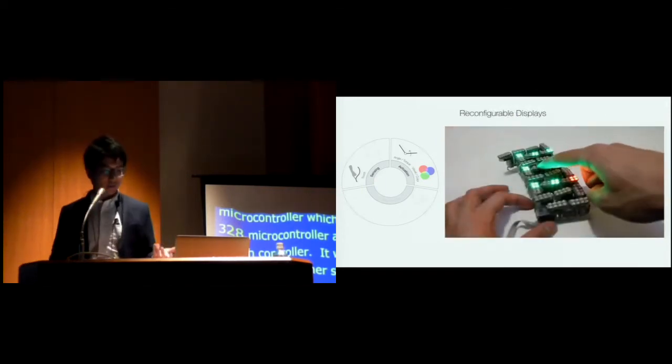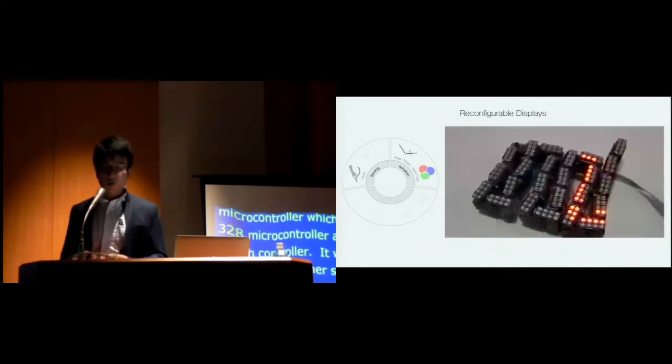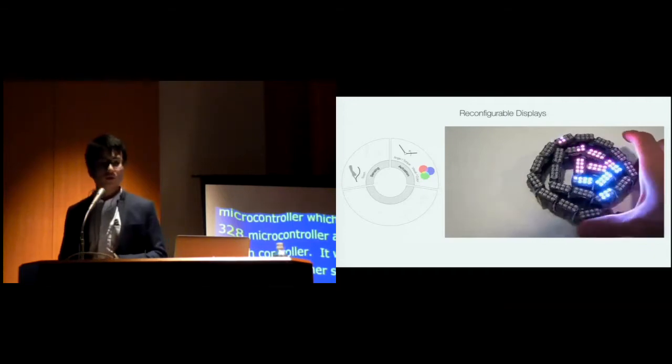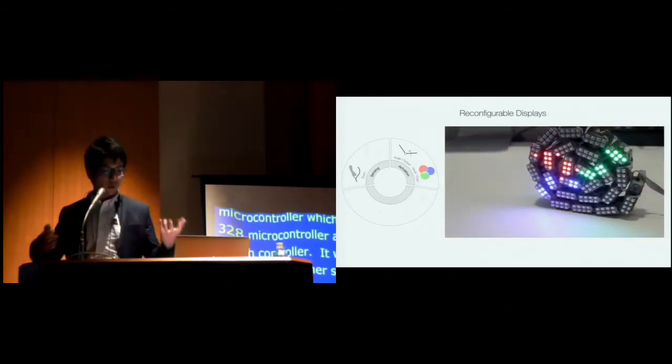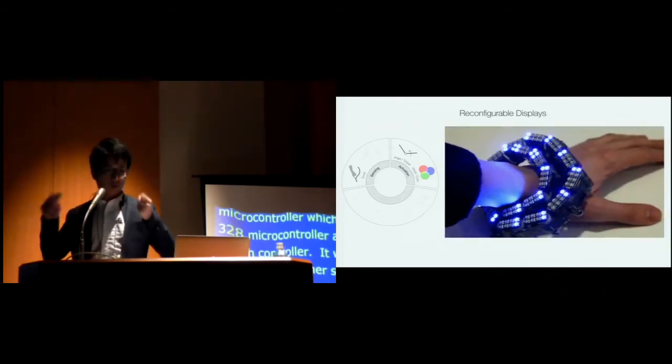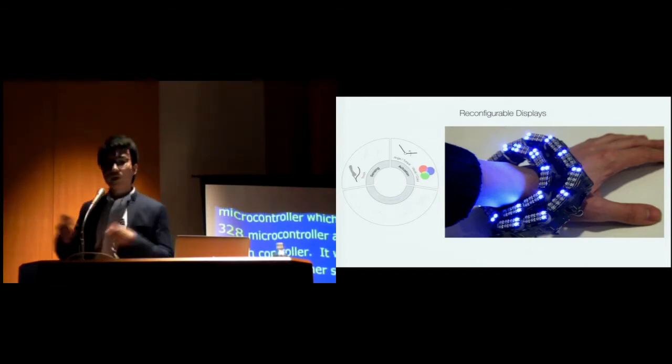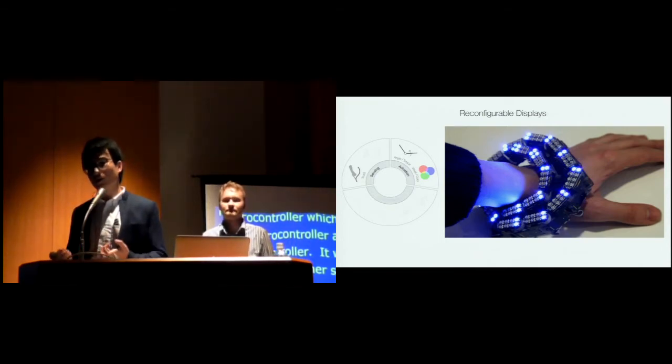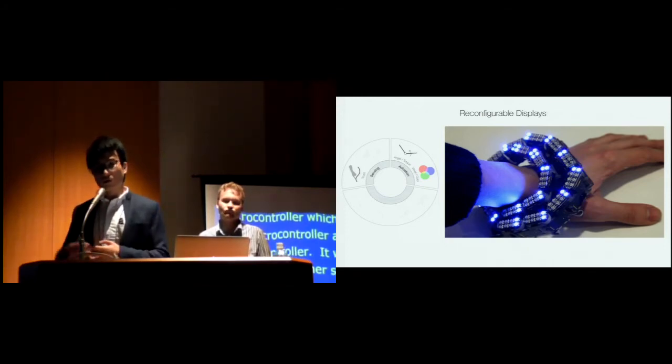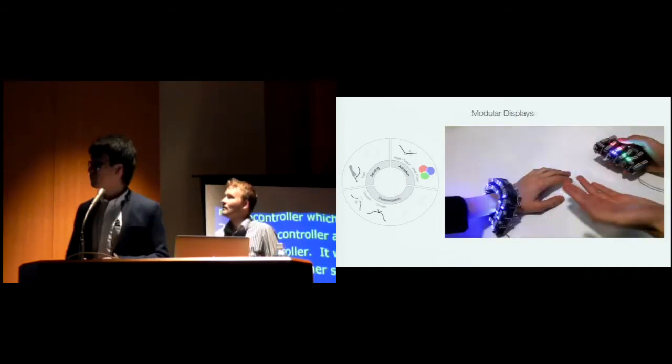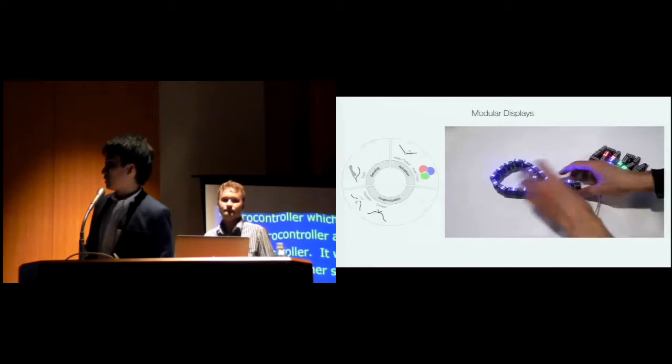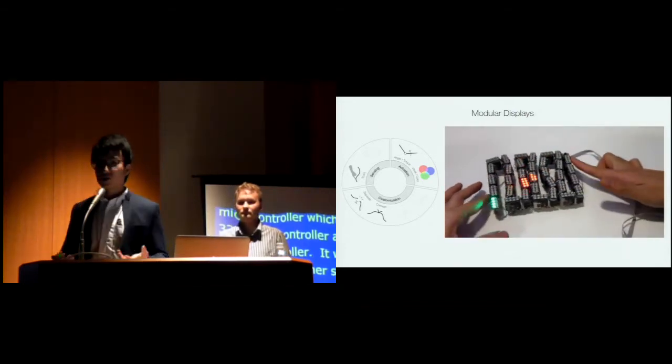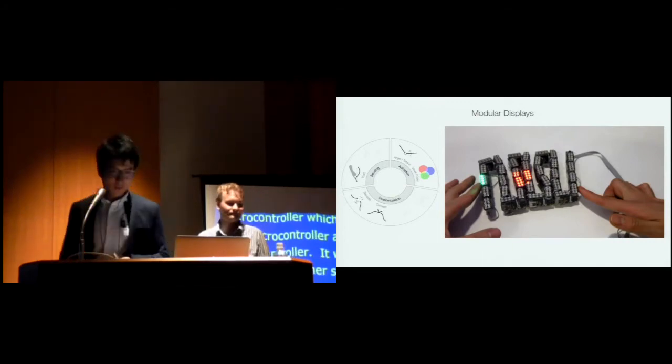Another interesting application with ChainForm is definitely this reconfigurable display using LED arrays on each module. This small display can transform dynamically according to the function or application on, for example, a smartphone. Usually when people talk about flexible or reconfigurable displays, they always talk about paper or plane shape. But we believe that the form factor of line has much more transformation capability. Although our implementation is still low resolution with lots of limitations for the shape, it's really interesting to look at the direction for shape-changing displays. Also with this display functionality, you can imagine like combining two. Maybe you have this smartphone made with ChainForm combined with your friend. Then you have a larger screen maybe to play a game together or watch a movie together.